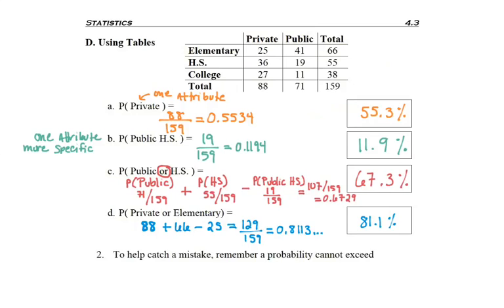And lastly, sometimes to catch a mistake, remember, probability cannot exceed 1 or 100%. So hopefully that'll help you catch a mistake. You still could have a mistake and not be over 100%, but usually that's a good indicator.